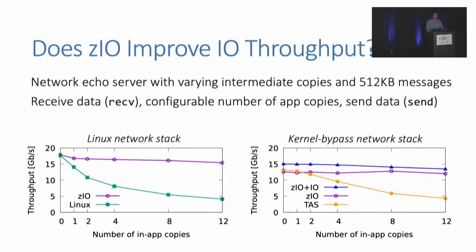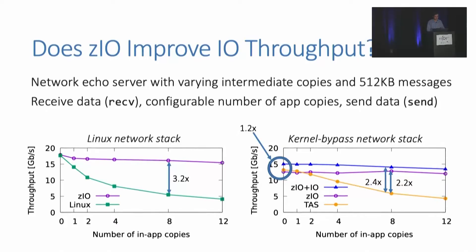First, does Zeo improve I/O throughput? We run a network echo server which reads data from the network through receive, copies data a configurable number of times, and then sends it back. We use 512 kilobyte messages and vary the number of intermediate copies, then measure byte throughput. On Linux, performance deteriorates as you increase the number of copies, while Zeo provides relatively consistent performance — up to a 3.2x speedup with 8 copies, which is the number of copies that Anna put requests do. With kernel bypass, TAS performance decreases similarly and Zeo remains constant, up to a 2.2x speedup. By integrating with the I/O stack, we eliminate additional I/O stack API copies, giving a 1.2x speedup at zero copies and up to a 2.4x speedup at 8 copies.